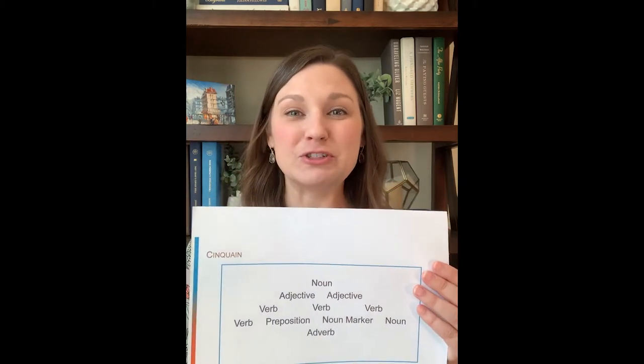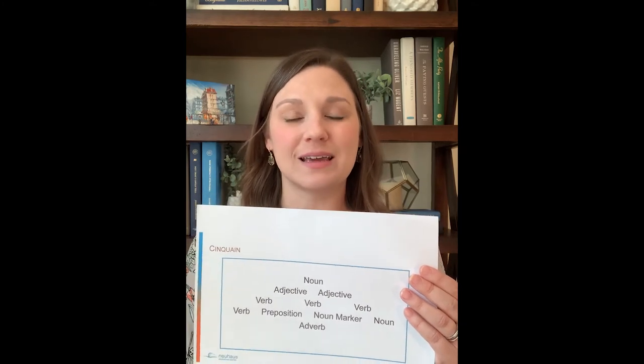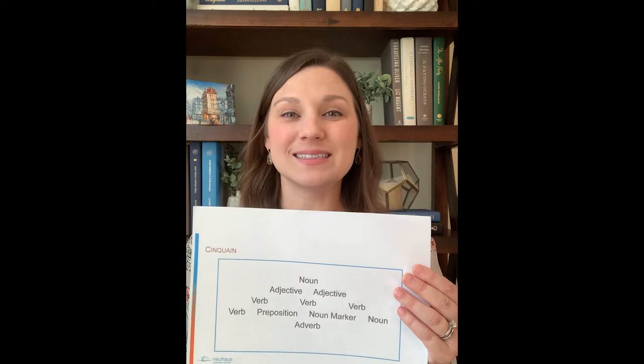Our second poem today is called a cinquain poem and it has five lines. You can choose any topic you like, but it helps to choose something that has motion, such as an animal, a type of transportation, or something that can physically move. The first line is a noun — the topic of your poem. The second line lists two adjectives that describe the noun. The third line lists three verbs that relate to your noun. The fourth line is where it gets really interesting: you will write a phrase — a verb, preposition, noun marker, noun — something like 'flying through the air,' 'whistling down the track,' or 'swimming under the sea.' The fifth and final line is an adverb that describes the verb from the previous line, something like quickly, today, slowly, or beautifully.